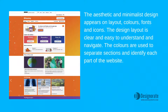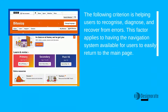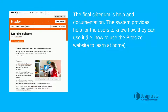A niche search can guide users, helping them to recognize, diagnose, and recover from errors. This factor applies to having the navigation system available for users to easily return to the home page. The final criterion is help and documentation — the system provides help for users on how they can use it.